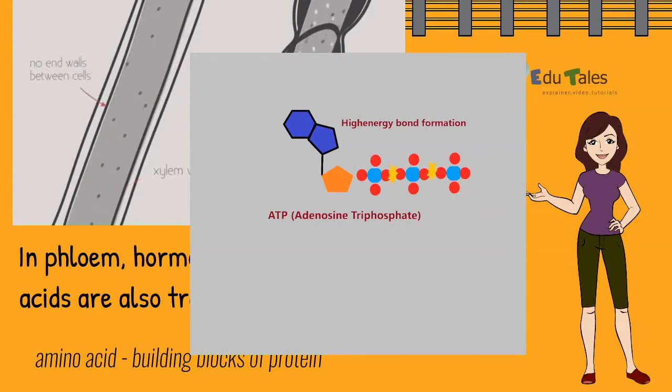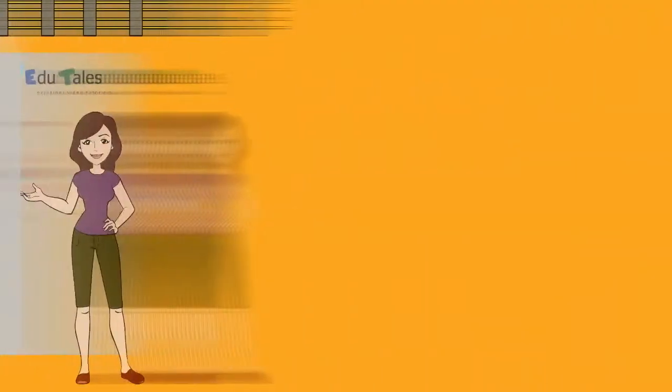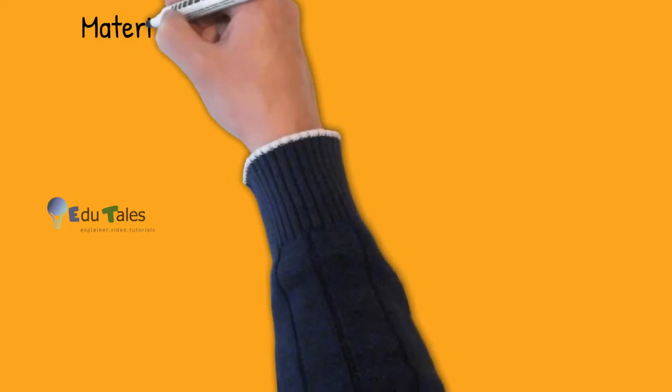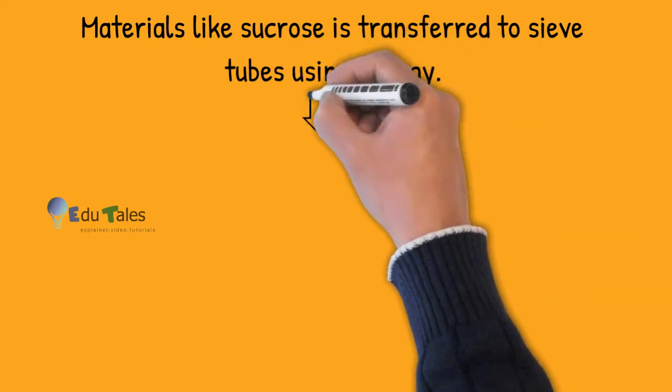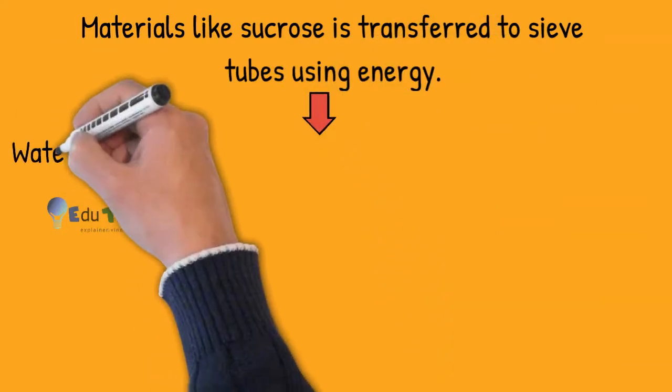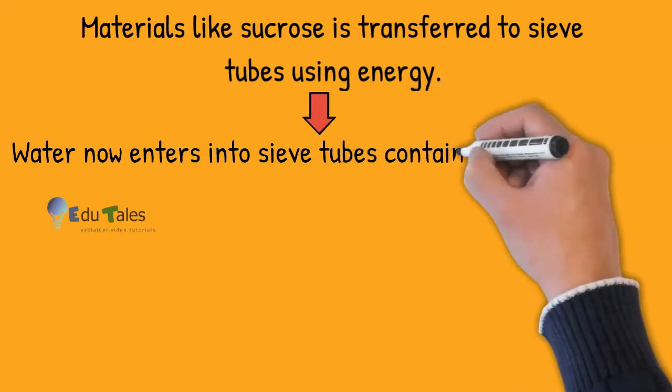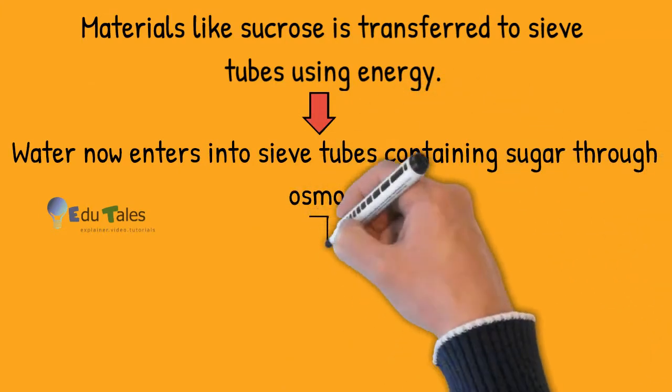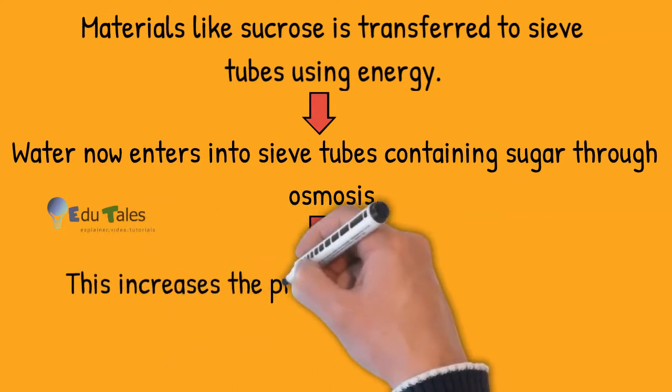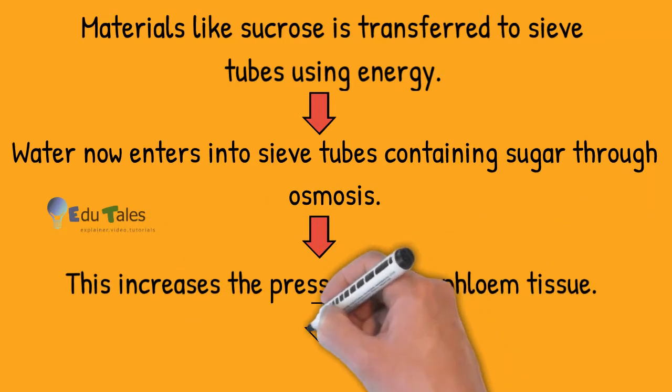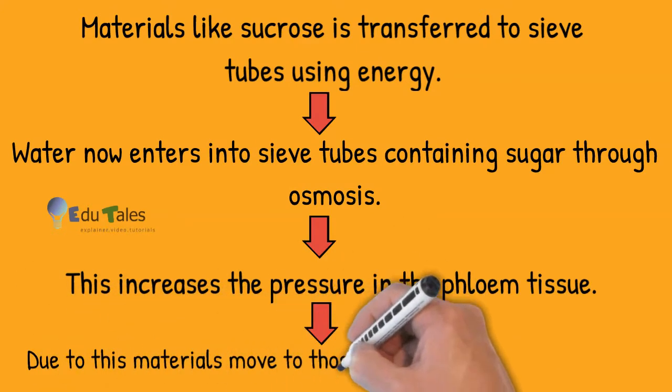Let us see the mechanism of transport in detail. Materials like sucrose are transferred to sieve tubes using energy from ATP. Water now enters into sieve tubes containing sugar by osmosis. This will increase the pressure in the phloem tissue.